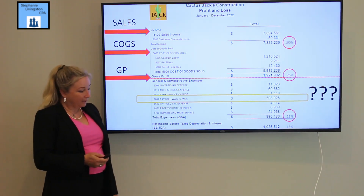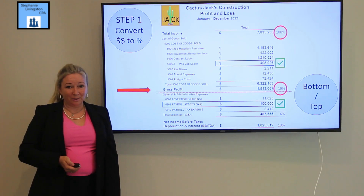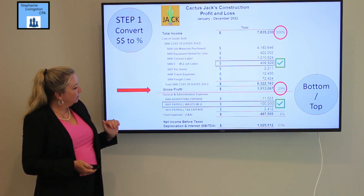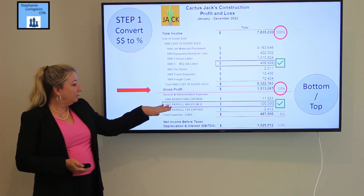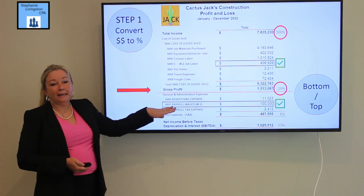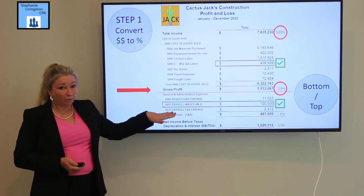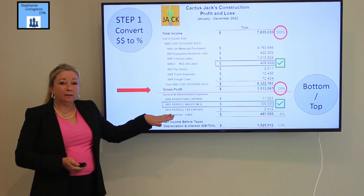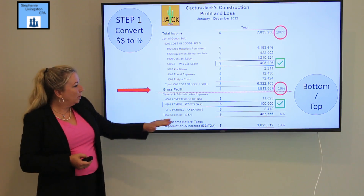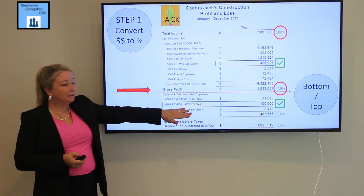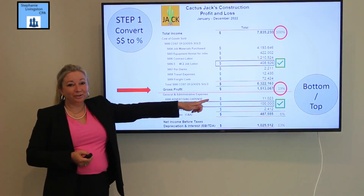Because I know this company well, I made a correction and moved the job W-2 expenses up to where they belong. Now my payroll wages below the line are only administrative W-2 wages — salaries of managers, office personnel, your controller, CEO, or VP — people who aren't hands-on performing a job. Once I took out all the job labor from that line and moved it above, and recalculated my percentage, I found my gross margin is only 19%.